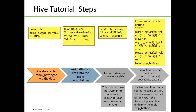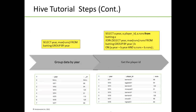The first line of the query creates the table batting. The three regular expression extract calls extract player ID, year, and run fields from the table temp_batting. Next, we group the data by year by performing a select of year and max runs from batting, grouped by year. Then we get the player ID by selecting year, player ID, and runs from batting, joining with a sub-select of year and max runs from batting grouped by year, where the criteria are that year A equals year B and runs A equals runs B.